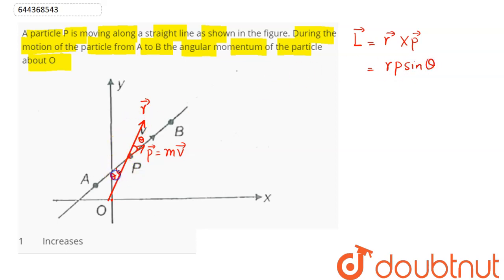This angle will also be theta. Now if we draw a perpendicular from origin to line AB, this OA distance is the perpendicular distance, making an angle of 90 degrees.